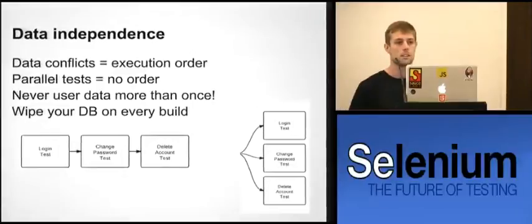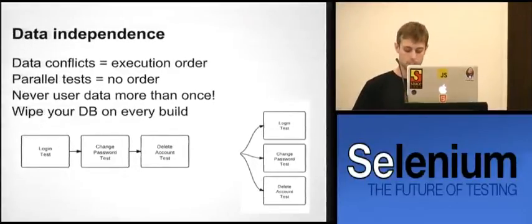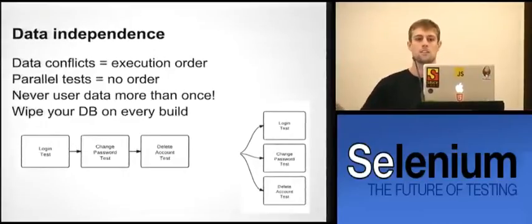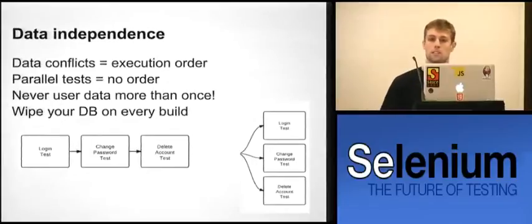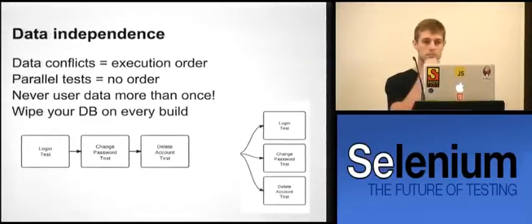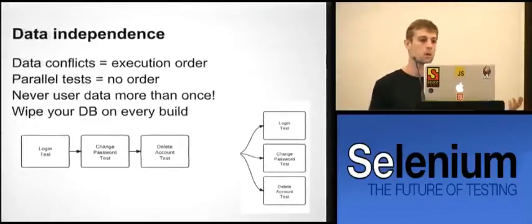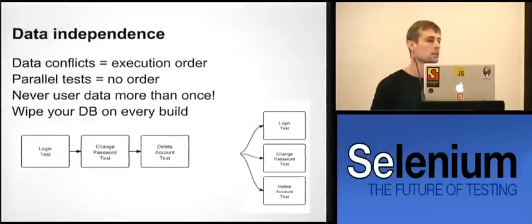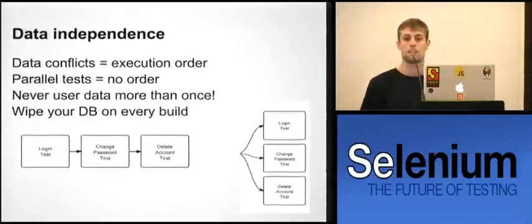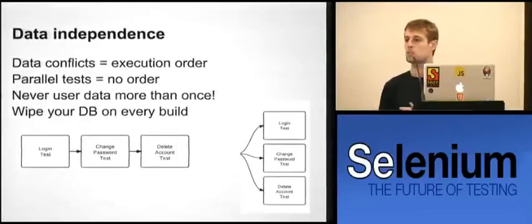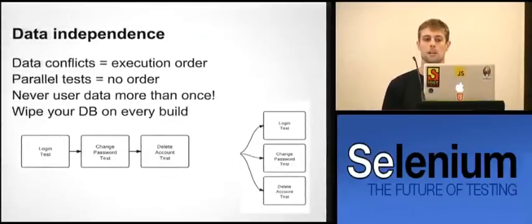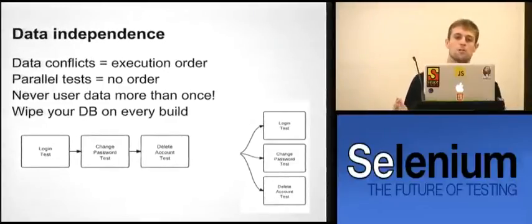There are different tricks for using independent data across tests. Depending on your company, you can get access to the database and inject data directly every time you're going to use the test. At Sauce, we have all our models available from testing the same way we have them from production code, so we can create accounts in milliseconds without going through the whole workflow of creating an account from the UI. You can also put hooks in your application and make REST API calls. The fundamental part is that every time you're going to use an account or item, you create it fresh. It needs to be brand new and nothing else touches it — that's the only way you'll be able to run all your tests in parallel.